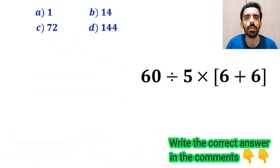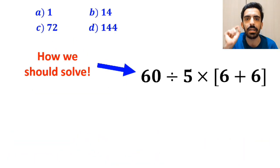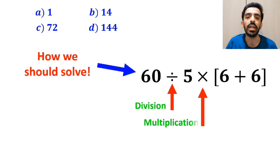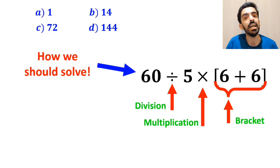Now, let me explain step by step how we should solve this expression properly. As you can see on the screen, in this expression, first we have a division sign, followed by a multiplication, and then a bracket.